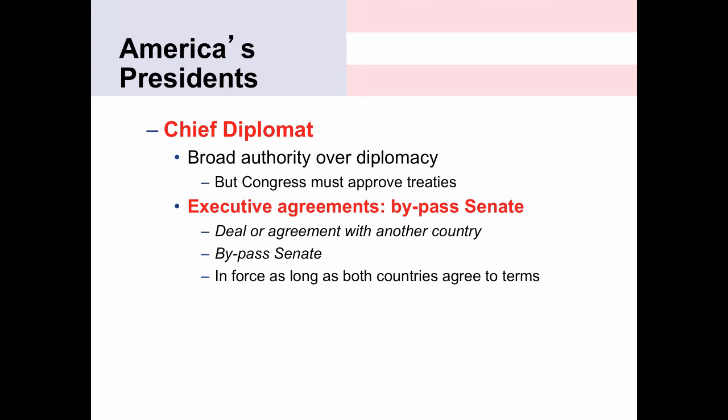A treaty has formal mechanisms for one or the other country to withdraw, and sometimes there are sanctions for breaking it. An executive agreement, however, is voluntary. The next president can agree to the executive agreement made by the previous president, or can simply repeal it and pull out. If the other country no longer likes the agreement, they can pull out at any time as well. So executive agreements give the president a lot more authority to negotiate and enter relationships with other countries and trade deals, but lack a strong enforcement mechanism or penalties for pulling out.